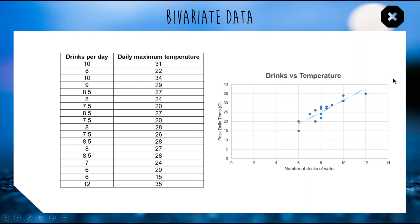We'll be talking more about trend lines and lines of best fit in the next lesson — for this week we're just going to focus mainly on bivariate data and scatter plots. It's painting a pretty clear picture: these two sets of data are clearly related.